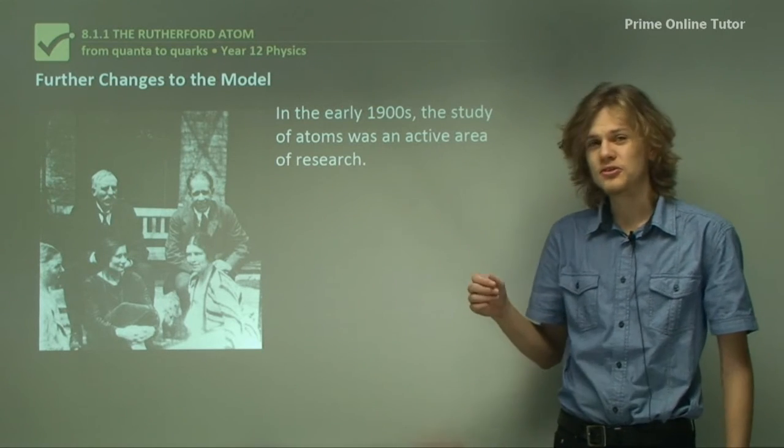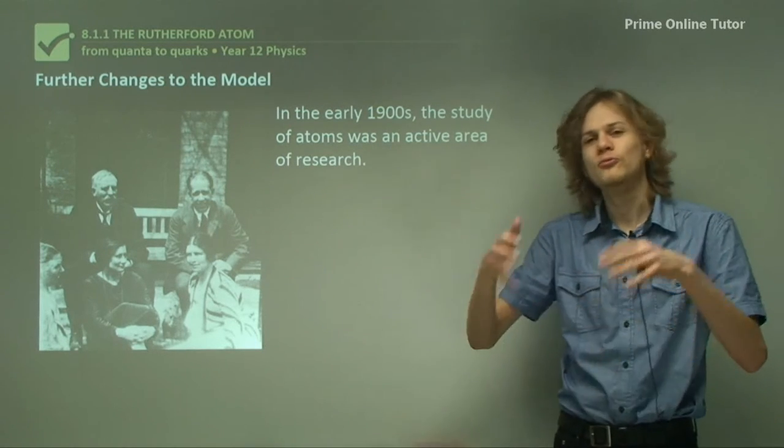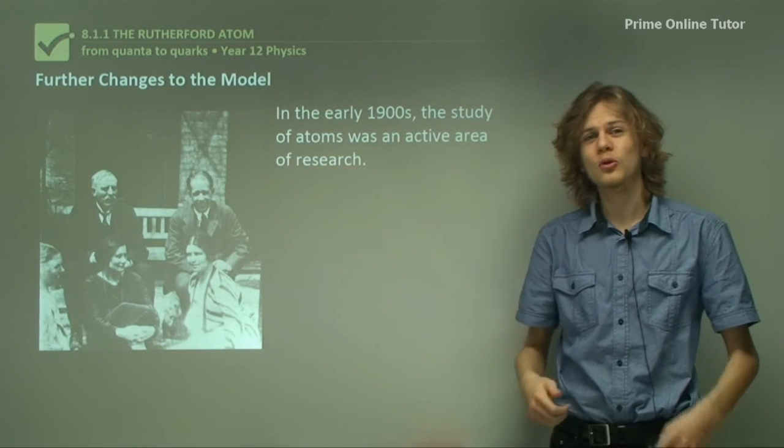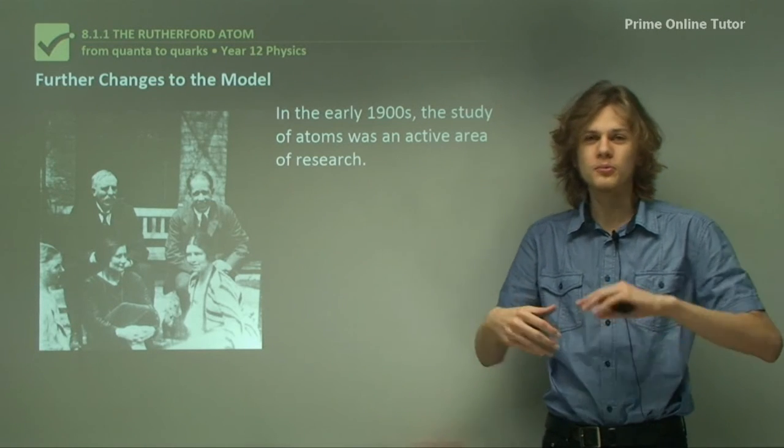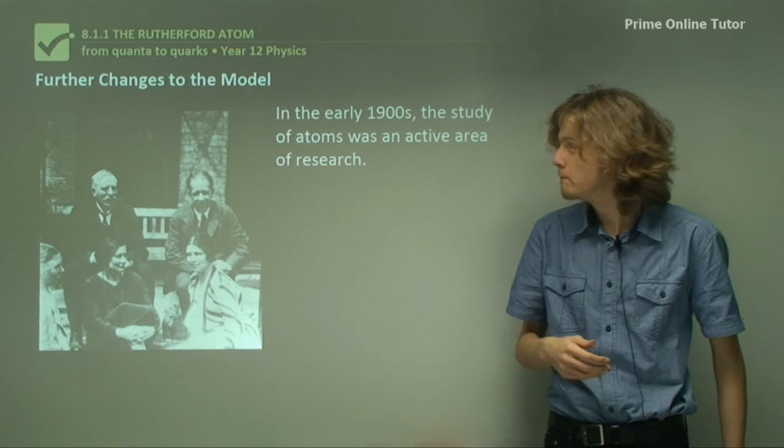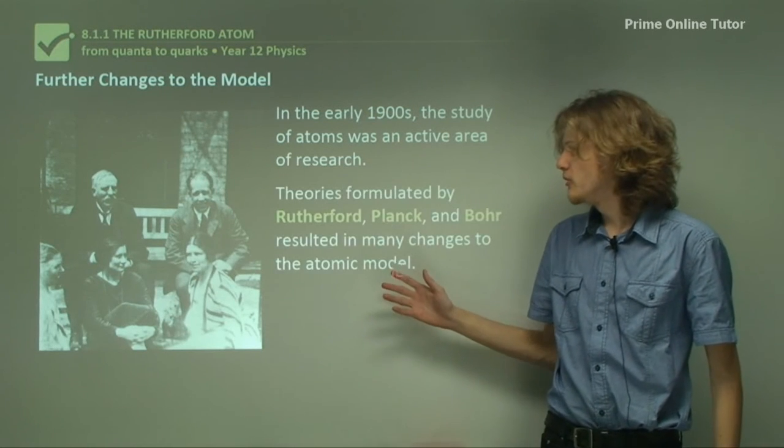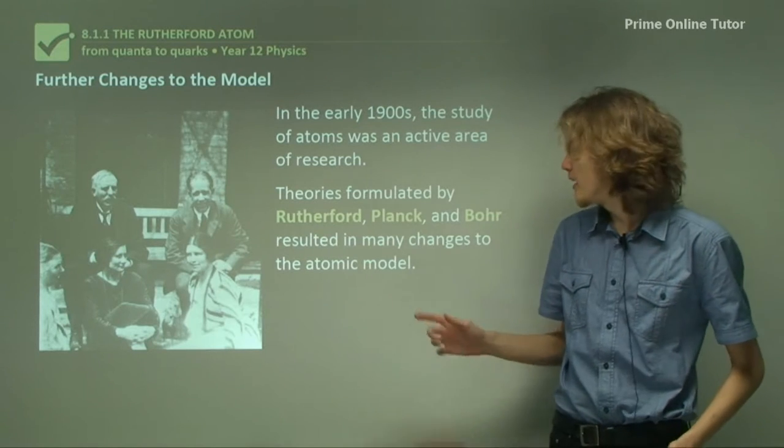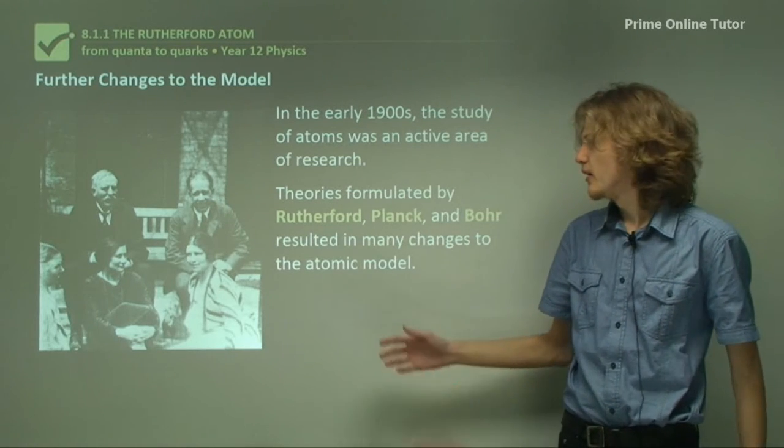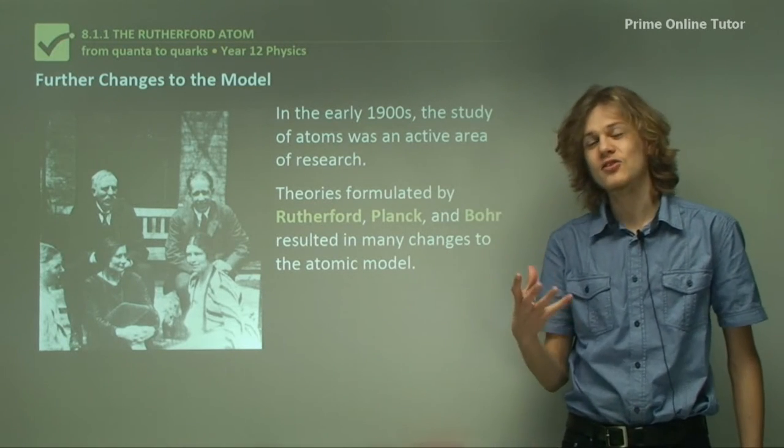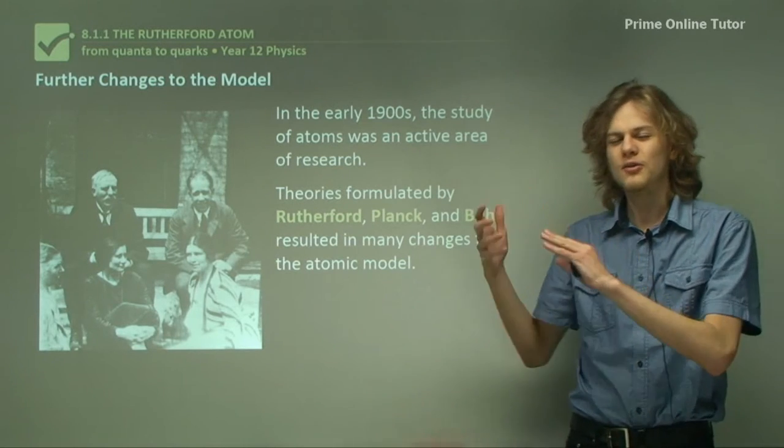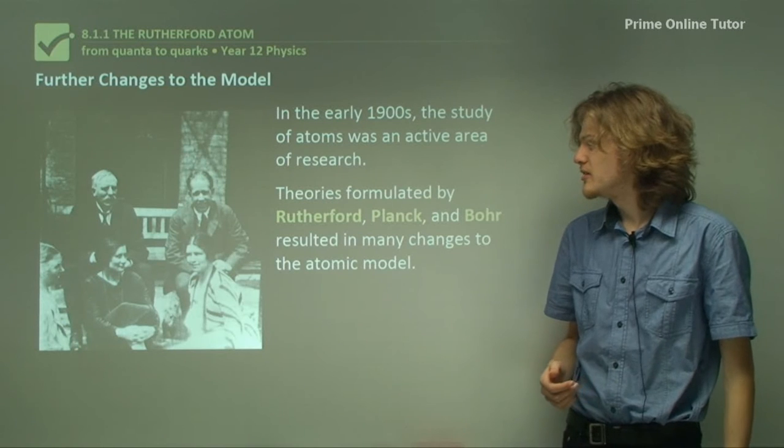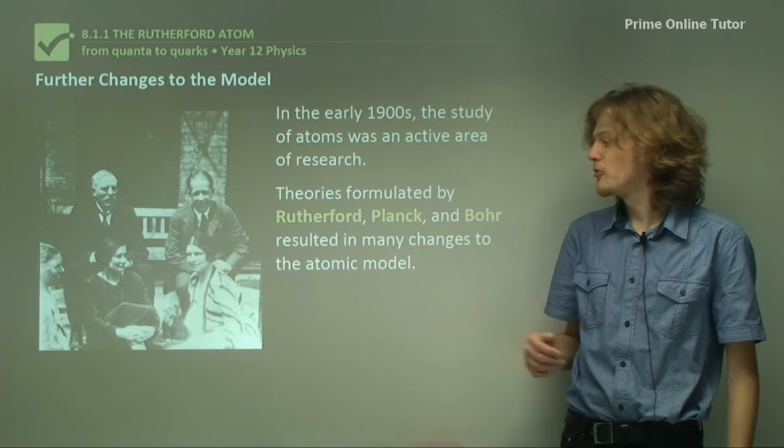So in the early 1900s, the study of atoms and their structure was an active area of research, and so a lot of progress was made on discovering the structure at this time. So theories formulated by Ernest Rutherford, Max Planck, and Niels Bohr resulted in many changes to the atomic model. And eventually we end up with something close to our model now. We can see Rutherford on the left and Bohr on the right over here.